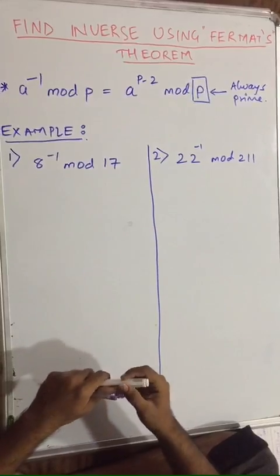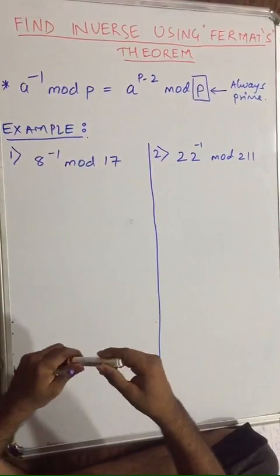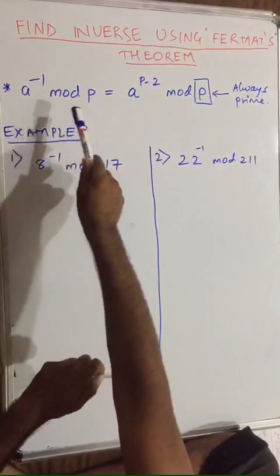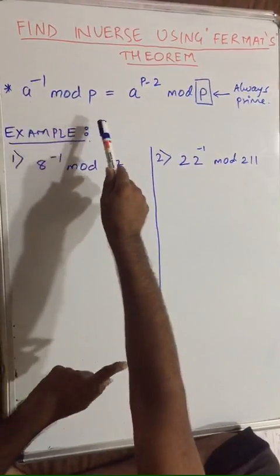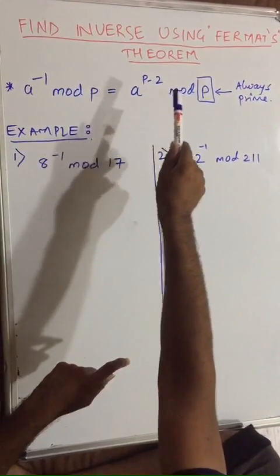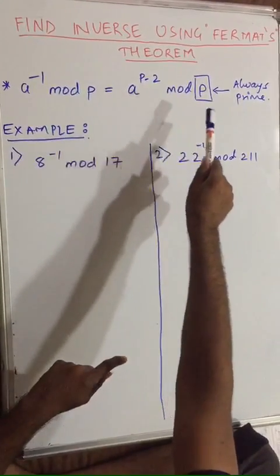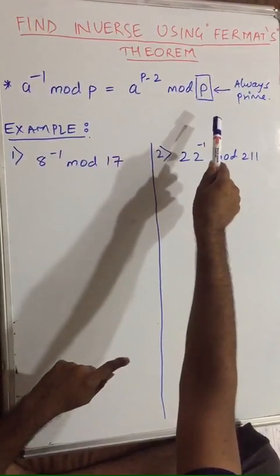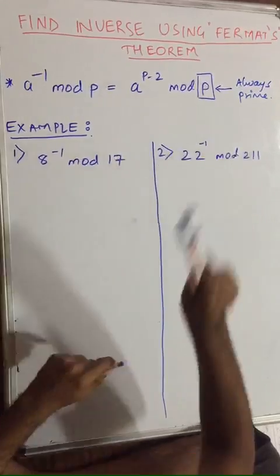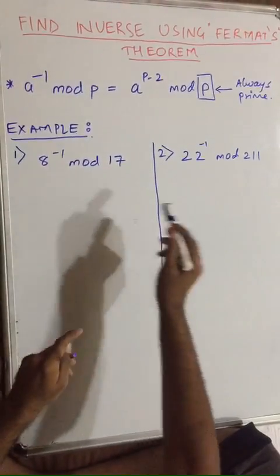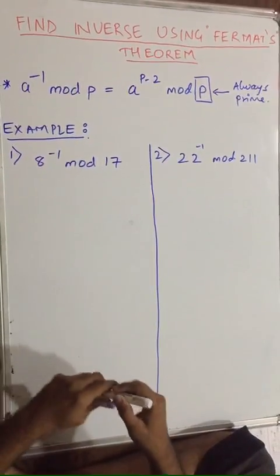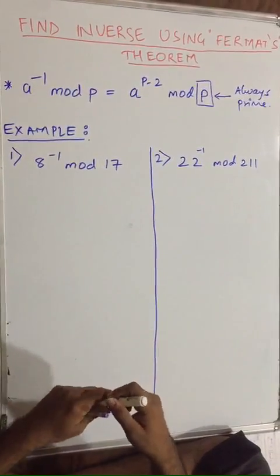Fermat stated that if you have an equation in the form of a inverse mod p, then it is equal to a raised to p minus 2 mod p, if and only if p is a prime number. So let us solve two examples and find out their multiplicative inverses.